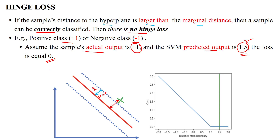In the graph, the marginal distance line is shown and the data point is at 1.5, which is away from the marginal distance line, meaning it is correctly classified. The decision boundary is defined as w-transpose x plus b equals zero — the hyperplane. Since the data point's distance of 1.5 is larger than the marginal distance of 1, it is correctly classified with zero hinge loss.